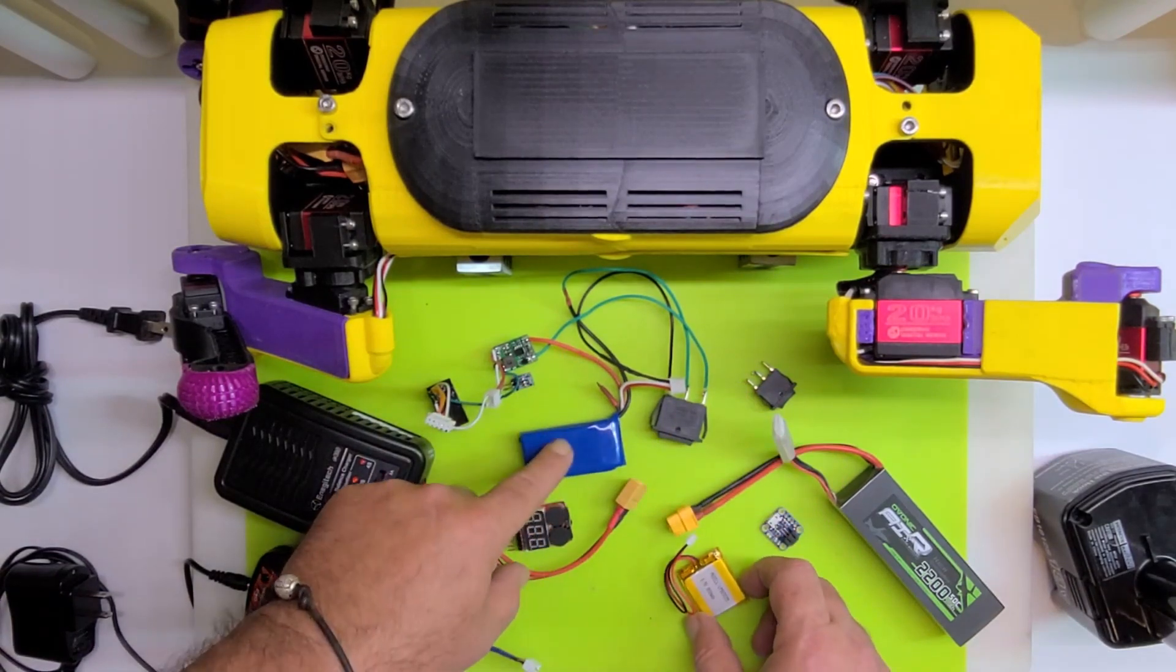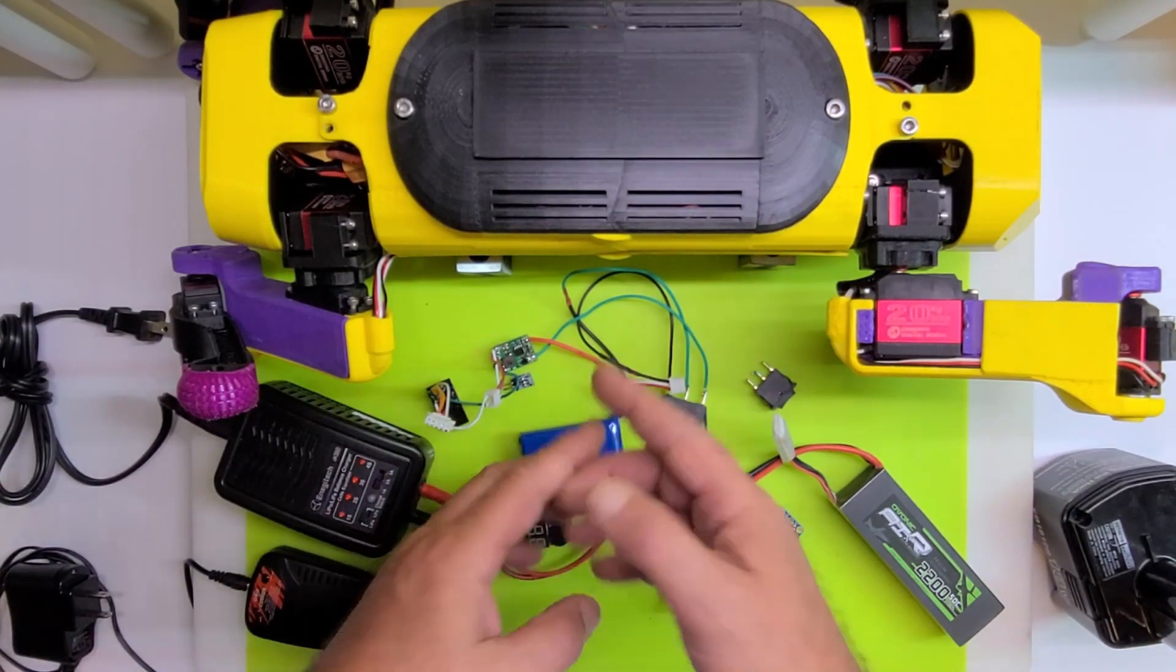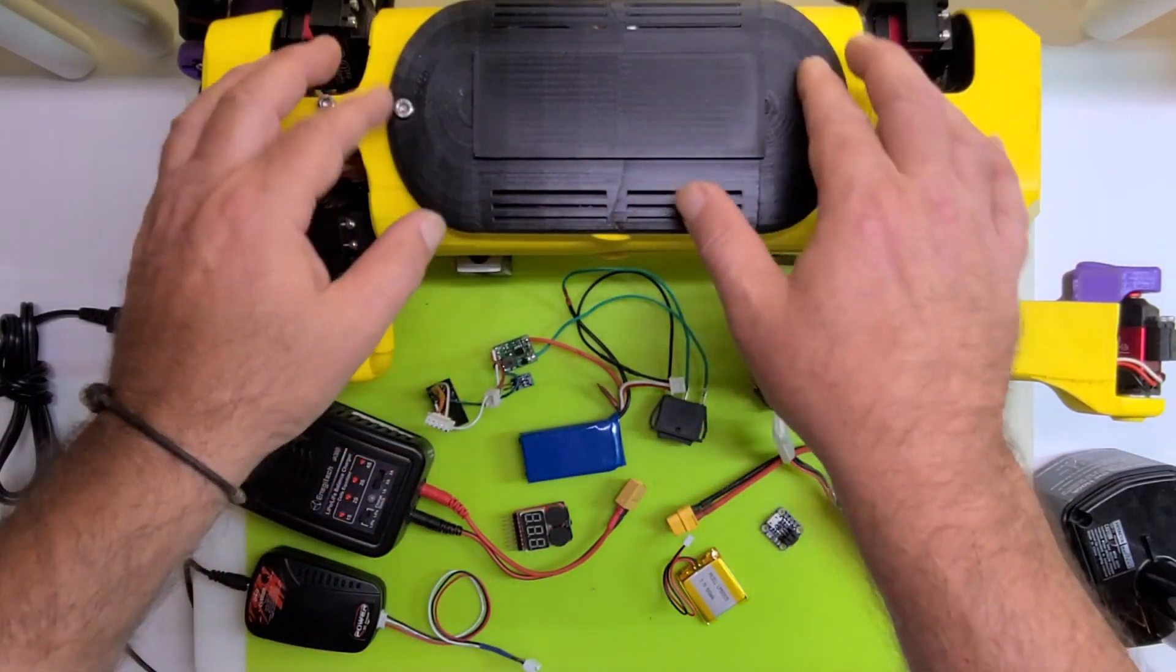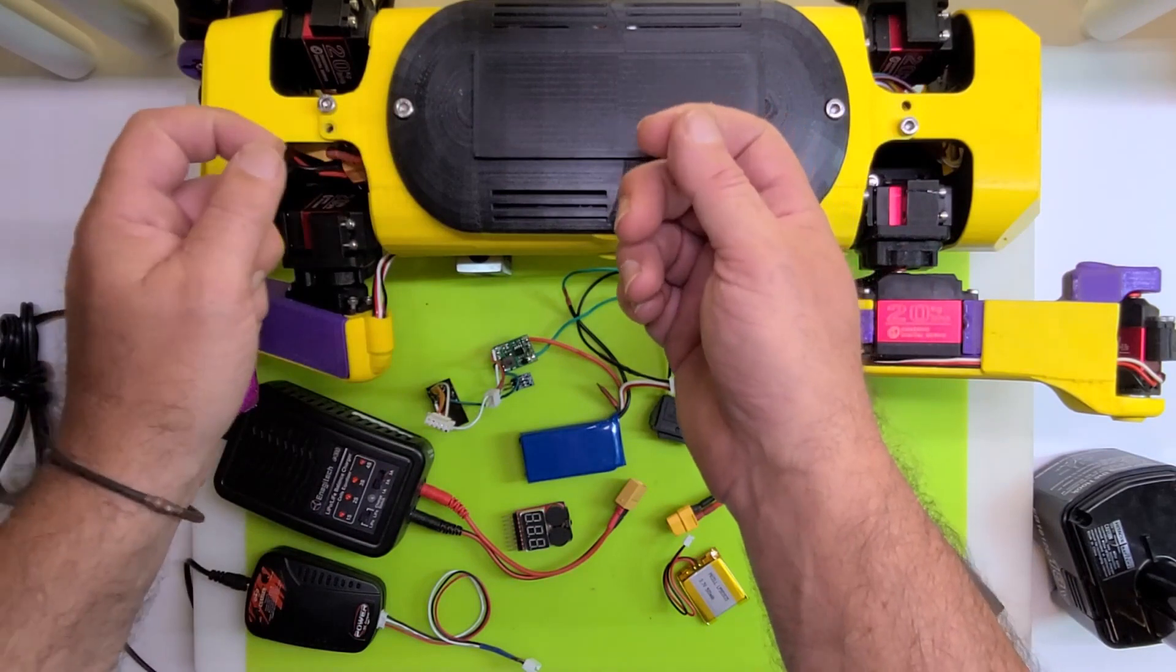But if you don't do that, then the common practice is to, like with Nova, when the battery drains you have to open it up, pop the battery out, disconnect it, take it over to your charger.